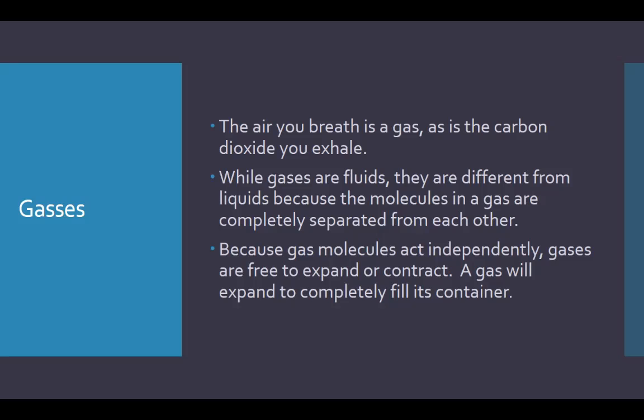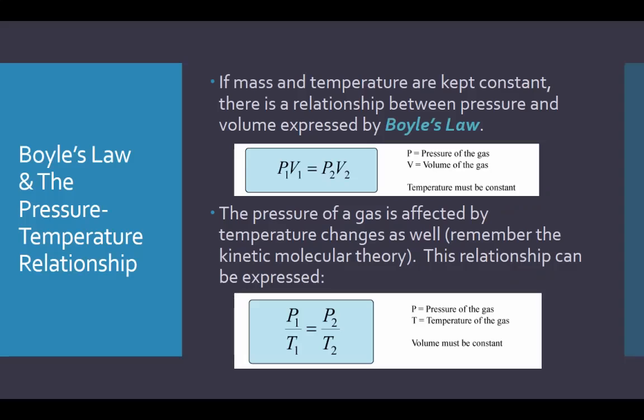Because gas molecules act independently, gases are free to expand and contract — they're not locked into a certain volume. They can expand to fill their container or be compressed into a smaller area, which leads us to a couple of gas laws. If you do this in chemistry, you'll go into much more detail, eventually working towards what they call the ideal gas law, PV = nRT. The first of these is Boyle's law, which relates pressure and volume: P₁V₁ = P₂V₂. As volume goes down, pressure has to go up; as volume goes up, pressure goes down.